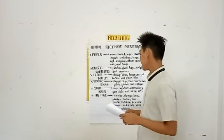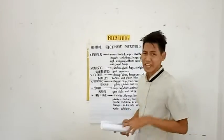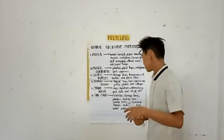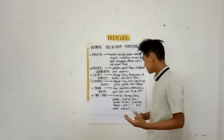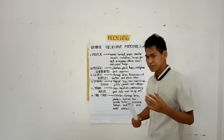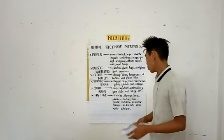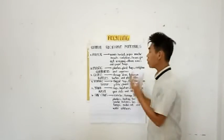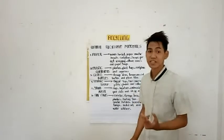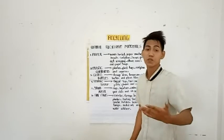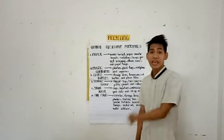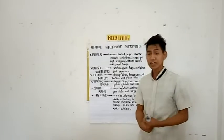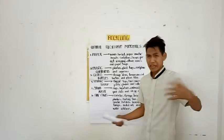Sixth, tin cans — these could be used as canisters, storage bins, planters, baking bins, candle holders, kerosene lamps, metal art, and water catchers. These are the most common recyclable materials that you always encounter in your home, in your kitchen, in your school, anywhere.